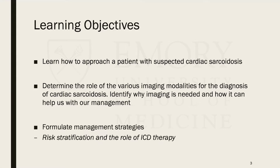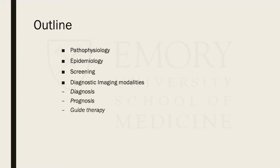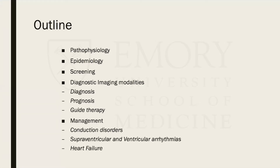We're going to try to formulate treatment strategies and risk stratification and determine the role of ICD therapy in these patients. In order to achieve these learning objectives, we will start by talking about the pathophysiology of sarcoidosis, epidemiology, determine who should be screened for cardiac sarcoid, discuss multimodality imaging for diagnosis, prognosis, and therapy guidance, and finally talk about management as it pertains to conduction disorders, supraventricular and ventricular arrhythmias, and heart failure.